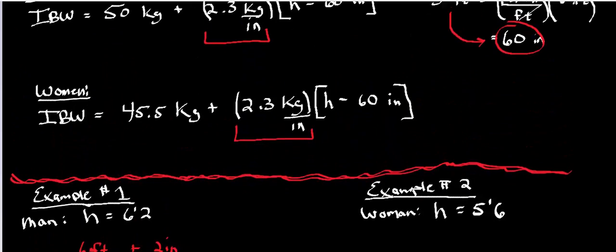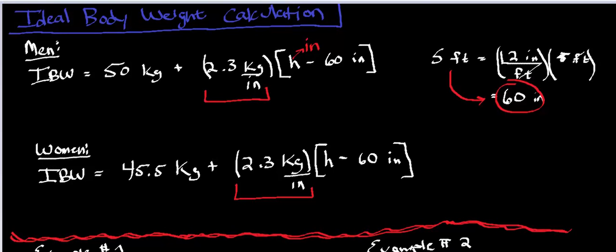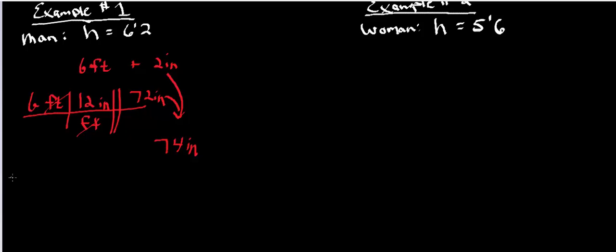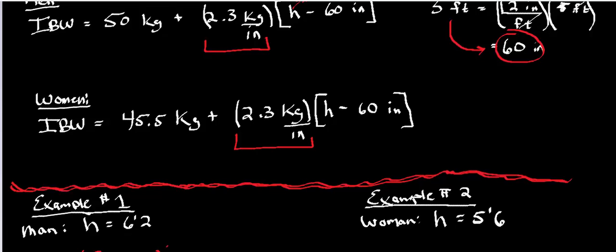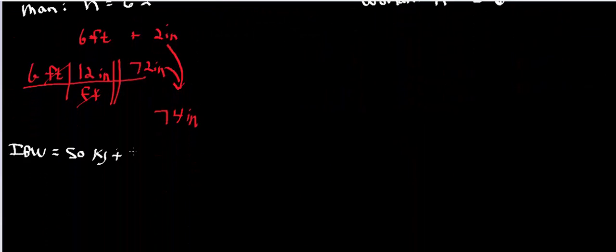So if we want to figure out this man's ideal body weight, let's apply this formula. So the formula states that his ideal body weight is going to be equal to 50 kilograms plus 2.3 kilograms per inch times every inch in excess of 5 feet, which is 60 inches. So I'm going to put this 74 inches in right there: 74 inches minus 60 inches. If you were to actually subtract this, take the difference of these two numbers, I can see very quickly that that's actually 14 inches right there.